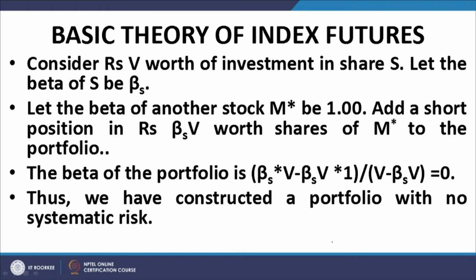Now let us talk about the basic theory of index futures. Consider rupees V worth of investment in a particular share S. Let the beta of S be beta_S. Let there also be a stock M* with a beta of 1, and a short position in M* taken worth rupees beta_S times V. We now have a portfolio comprising a long V value of share S with beta equal to beta_S, and a short beta_S * V value of stock M* where beta of M* equals 1. If you work out the beta of this combined portfolio, you find that the beta equals zero.